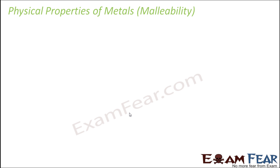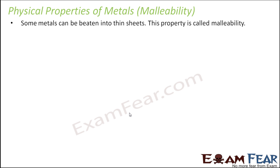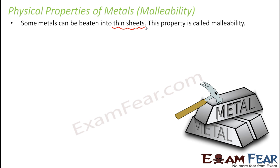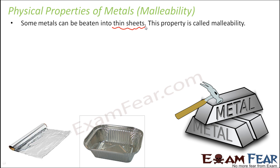The next property is malleability — the property by which metals can be beaten into thin sheets. Have you ever used aluminium foil for wrapping your food? When you pack your lunchbox, a thin foil is used for wrapping. That foil is made up of aluminium. So how do you get such thin sheets out of a hard metal like aluminium? This shows that aluminium has the property that it can actually be beaten into thin sheets.